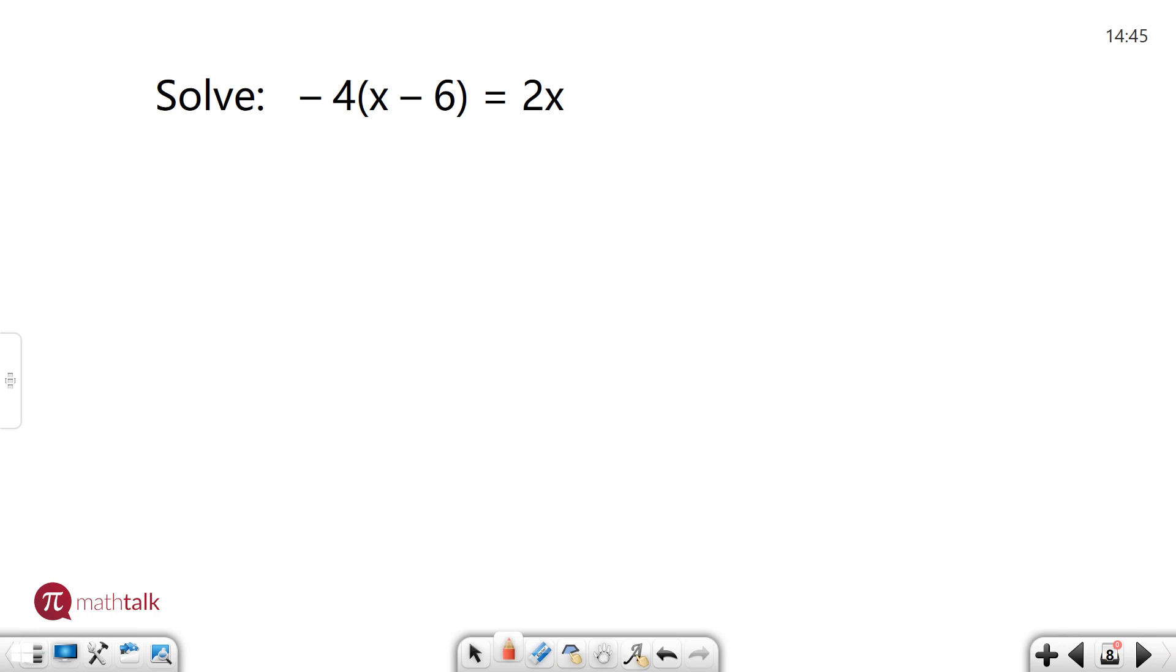The distributive property says that if you have a number that's being multiplied by a set of terms in parentheses, you actually distribute the number on the outside. What that looks like is you take the number on the outside and you multiply it by each number or value on the inside.